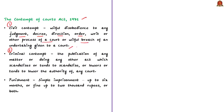Criminal contempt means publication of any matter or doing any other act which scandalizes or tends to scandalize or lower or tends to lower the authority of any court. When it comes to punishment, a contempt of court may be punished with simple imprisonment for a term which may extend to six months, or with a fine which may extend to 2,000 rupees, or both. In the case of Prashant Bhushan, it was a criminal contempt.